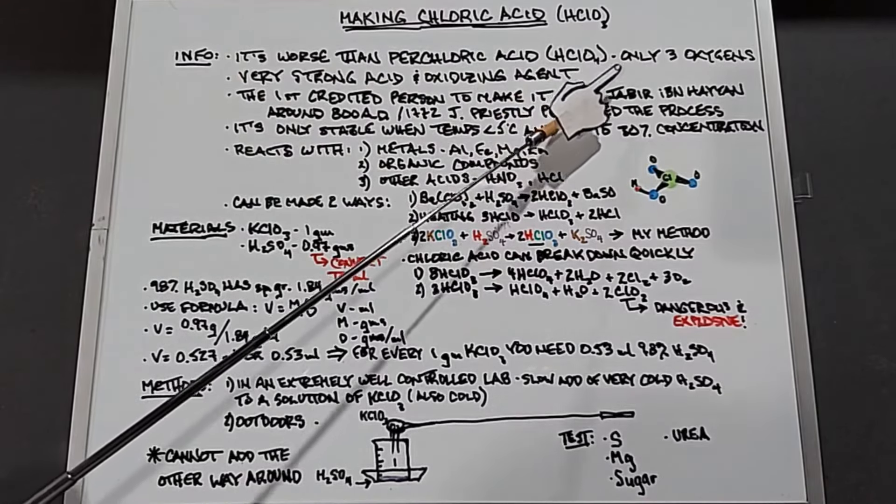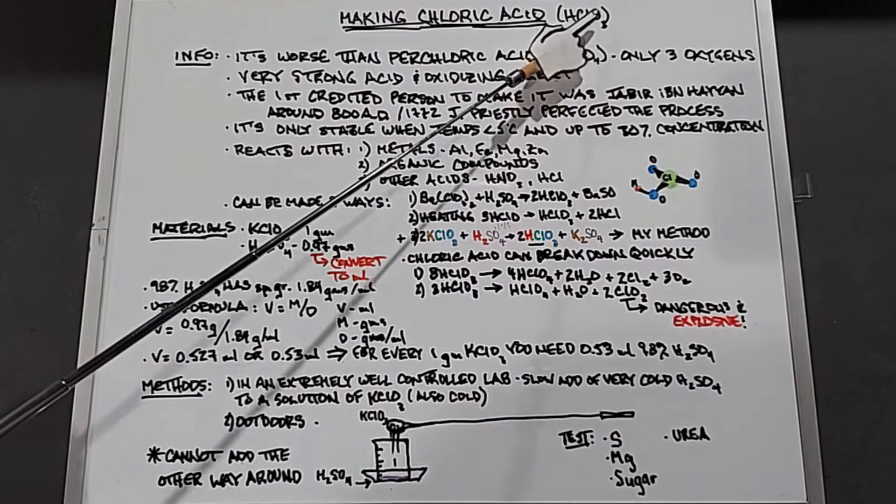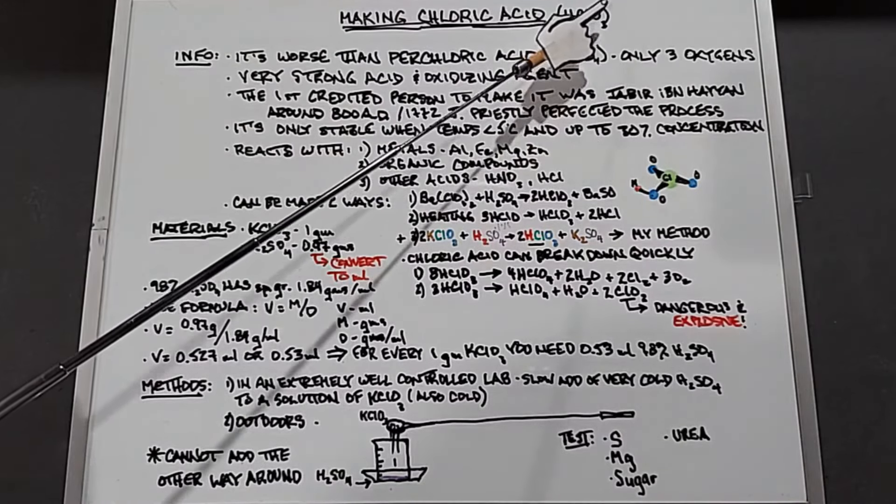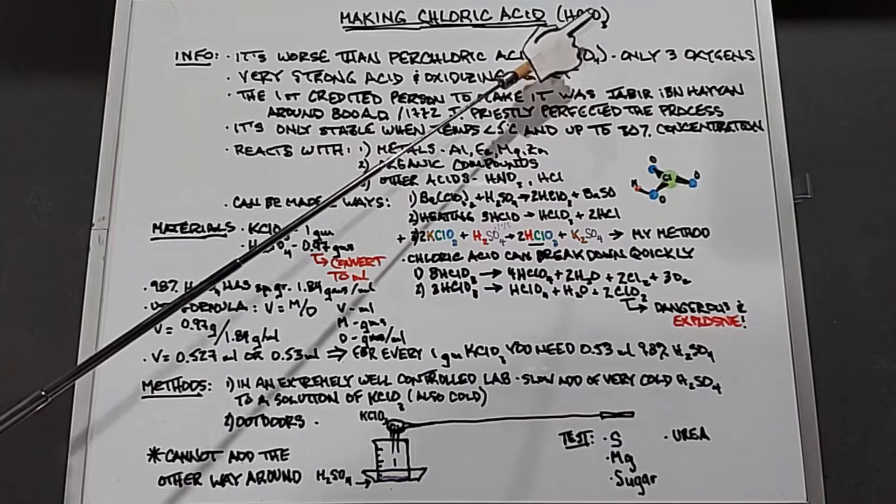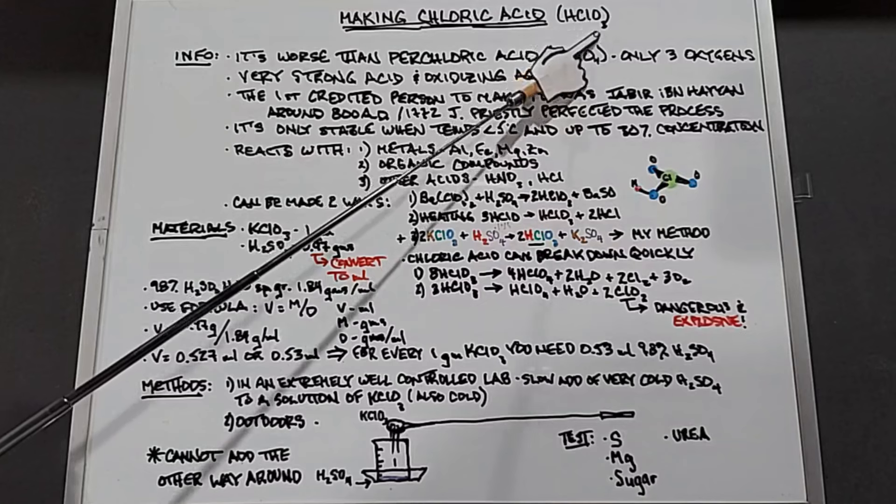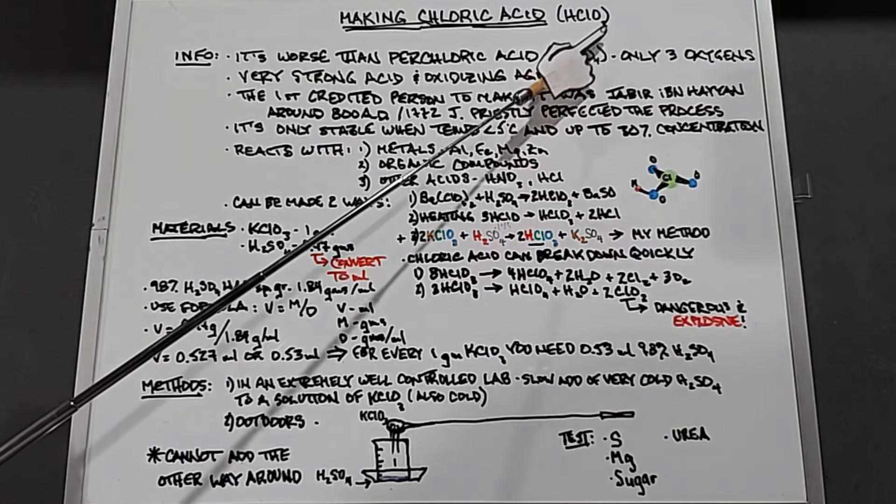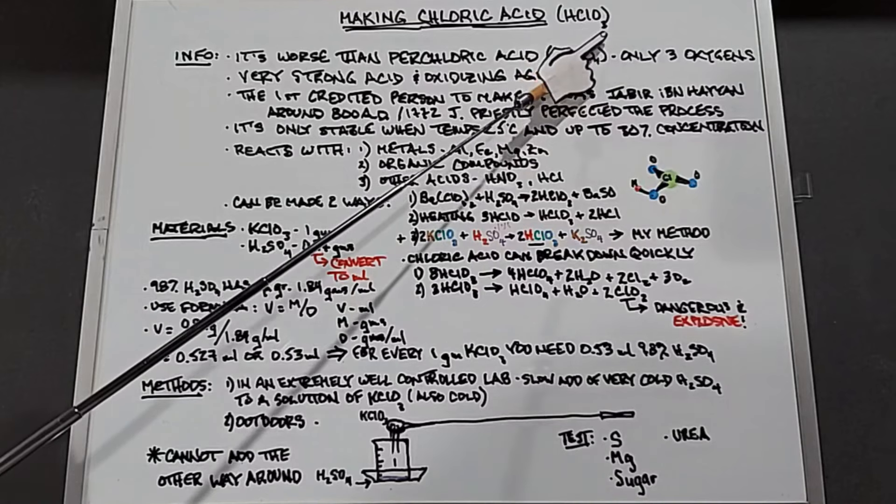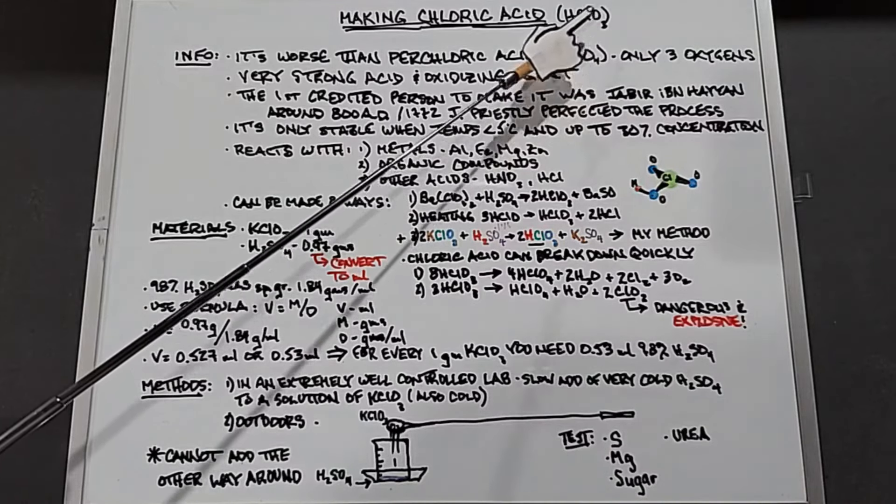We can look at this sort of like oxygen exists separately. O2 in the air is very stable. Ozone is made of O3, three oxygens, and ozone we know is extremely reactive. So the three oxygens is why chloric acid becomes much more reactive than perchloric acid.